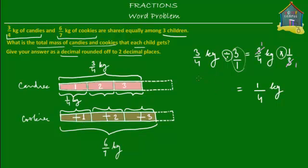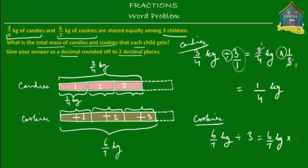How about the cookies? There is six-sevenths of a kilogram of cookies, and those have to be divided among three children. So each child will get six-sevenths of a kilogram multiplied by one-third. Simplifying: six and three give you two and one. So two times one is two, and seven times one is seven — each child gets two-sevenths of a kilogram of cookies. These two brown units, which is the share of one child, is equal to two-sevenths of a kilogram.